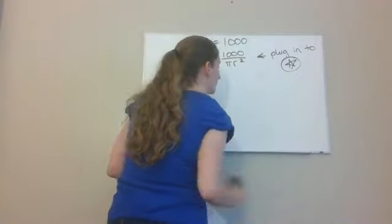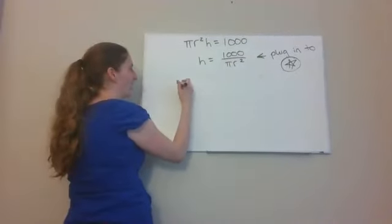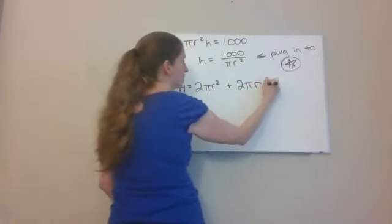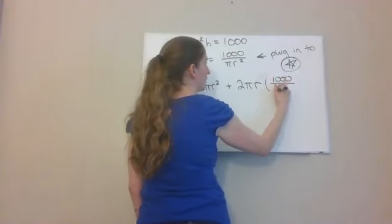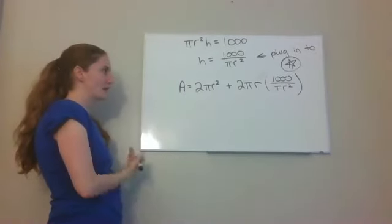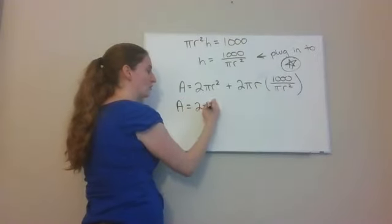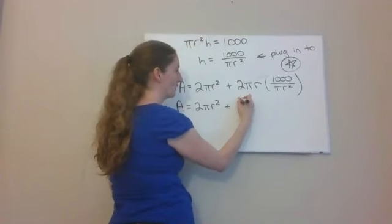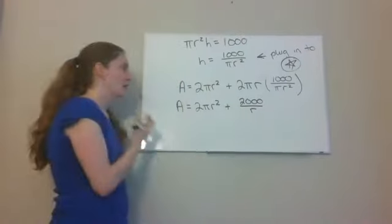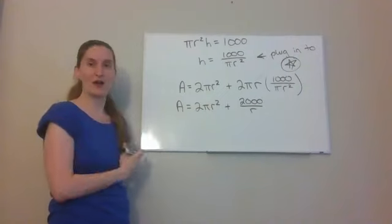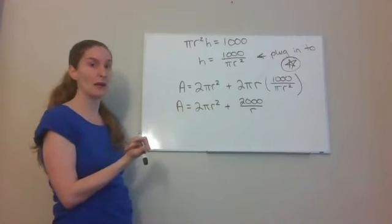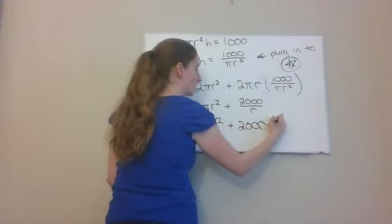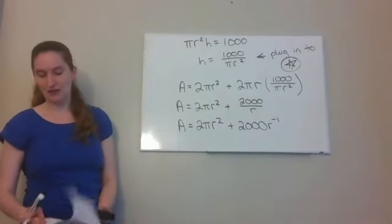Plugging h equals 1,000 over π r² into the surface area equation: A equals 2π r² plus 2π r times (1,000 over π r²). Simplifying — the π's cancel and one r cancels — giving A equals 2π r² plus 2,000 over r. Rewriting with a negative exponent: A equals 2π r² plus 2,000 r⁻¹. Now I can use the power rule to take the derivative.